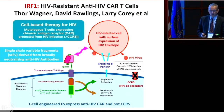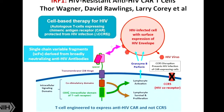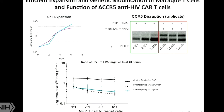In our UM1, Thor Wagner, David Rawlings, Larry Corey, and others will focus on using single-chain variable fragments derived from broadly neutralizing antibodies to target HIV-infected cells with surface expression of HIV envelopes. Critically, applying knowledge from first-generation DEFEAT HIV, we will protect the CAR-modified T cells via CCR5 disruption to prevent HIV infection of these CAR-expressing cells. We already have substantial preliminary data showing we can expand these T cells in vitro, disrupt CCR5 in macaques using MegaTALs or zinc finger technology, and confirm CAR T cell functionality against HIV-infected cell lines.